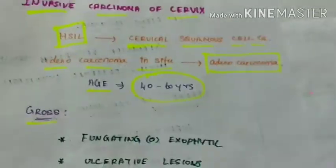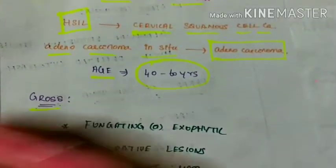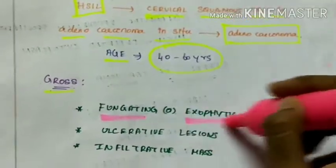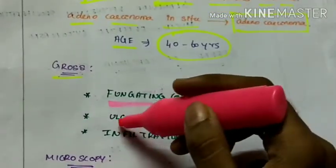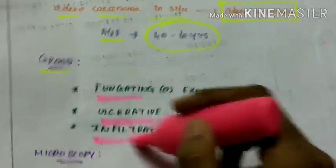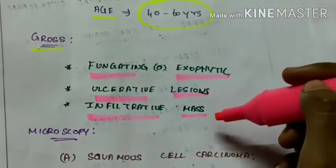Grossly, there is fungating or exophytic appearance with the presence of ulcerative lesions and infiltrative mass in the cervix.